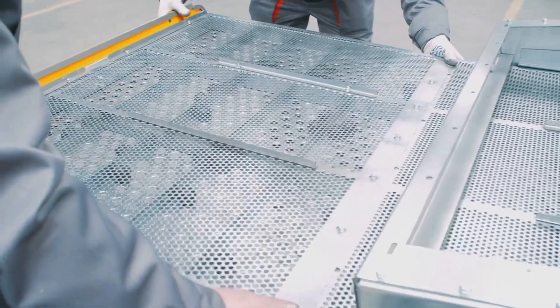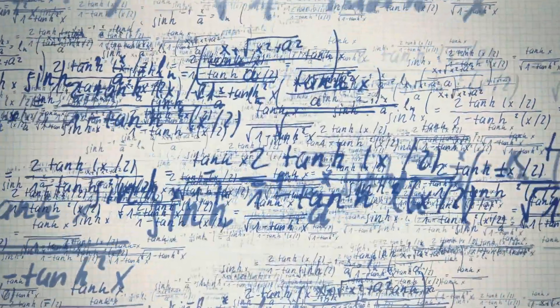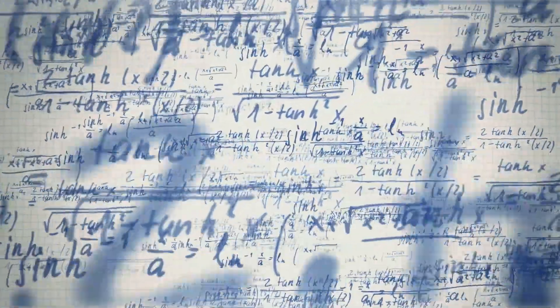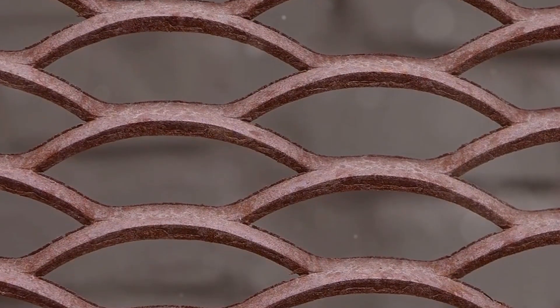Before running a heat transfer simulation, the computational domain needs to be divided into smaller, manageable cells called a mesh. This mesh acts as a grid upon which the energy equation is solved numerically. The quality of the mesh significantly impacts the accuracy and stability of the simulation. In regions with high temperature gradients or complex geometries, a finer mesh with smaller cells is necessary to capture the details of the heat transfer phenomena. Coarser meshes can be used in areas with more gradual temperature variations.